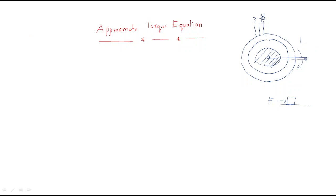When torque is applied on the rotor, the rotor rotates with some speed. The general relation is: power equals torque into speed, where speed is in radians per second. In a three-phase induction motor, we can express this as gross mechanical power developed equals gross torque multiplied by rotor speed W_R.